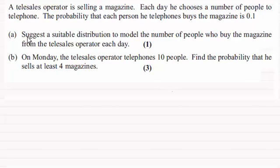In part A, suggest a suitable distribution to model the number of people who buy the magazine from the telesales operator each day for one mark. And in part B, on Monday the telesales operator telephones 10 people. Find the probability that he sells at least four magazines for three marks.